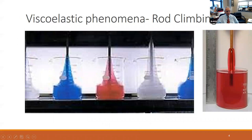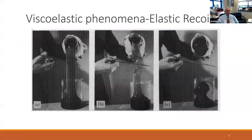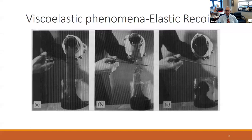Materials with different degrees of elasticity display different degrees of rod climbing. Rod climbing is also a function of the rotation speed of the mixer. Another very important property of viscoelastic materials is elastic recoil, which can be observed in food materials. If you buy light syrups containing gums to increase viscosity, when you stop making the material flow from the bottle, you see the stream bouncing back — that is the elastic recoil phenomenon.